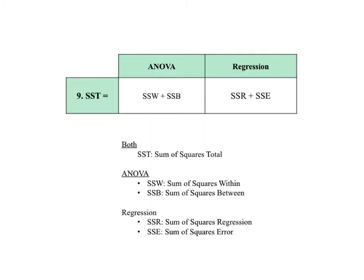For both ANOVA and regression, the total variation is called the sum of squares total, or SST. For ANOVA, SST equals SSW plus SSB, where SSW is the sum of squares within and SSB is the sum of squares between. For regression, SST equals SSR plus SSE, where SSR is the sum of squares regression and SSE is the sum of squares error.